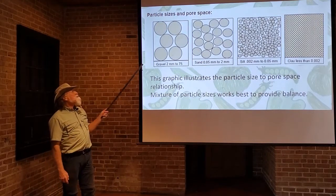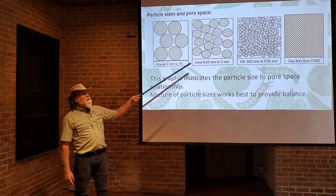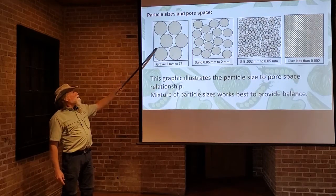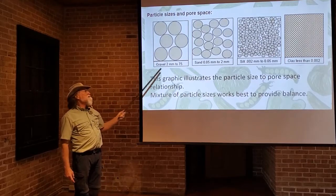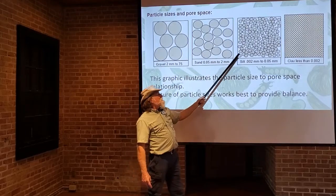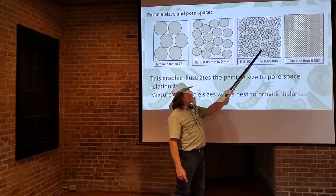This graphic illustrates how particle size and pore space are directly related. Where we have gravel, which is very large particles, you have lots of large pore spaces. As we move down the graphic going to sand, then silt, and then clay, you can see that as the particle size gets smaller, the pore spaces get smaller.